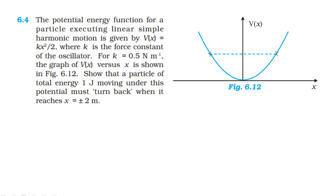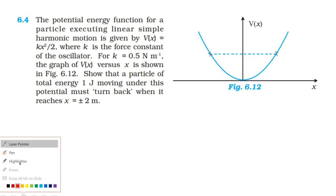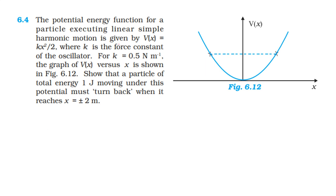We are going to show that a particle of total energy 1 joule moving under this potential must turn back when it reaches x equal to plus or minus 2 meter. For a particle in linear simple harmonic motion, total energy equals kinetic energy plus potential energy. Kinetic energy is equal to half m v squared, and the potential energy V of x is equal to k x squared.